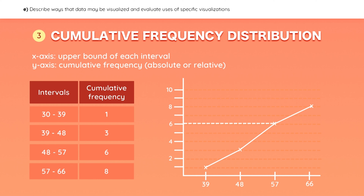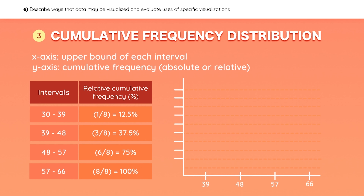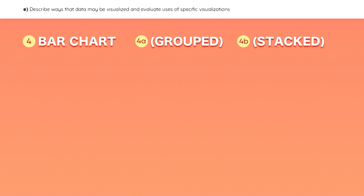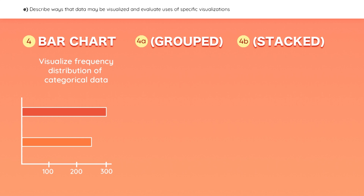Notice that this also works for relative cumulative frequencies — the y-axis now has percentages. After plotting the line, we can see that 75% of the observations are below 57 degrees. A bar chart is used to visualize the frequency distribution of categorical data. In this example, each bar represents a sector, and we can easily see that there are 300 companies within the technology sector.